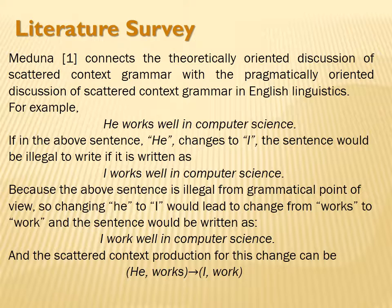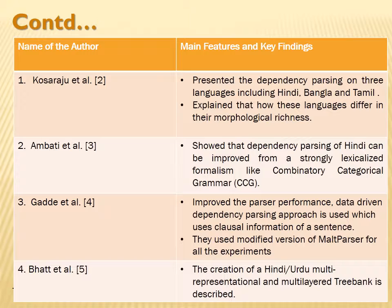And the scattered context production for this change is (he, works) → (I, work). So whenever a sentence comprises 'he' and 'works,' this automatically would change into 'I' and 'work' in the sentence.